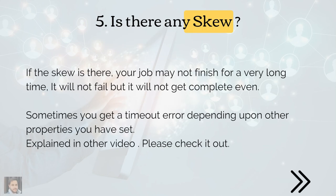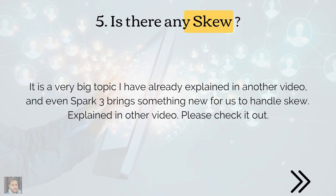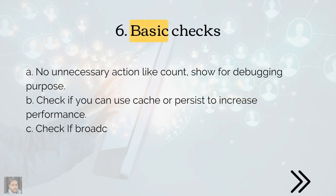The third scenario could be skew. If there is skew, you may keep waiting for your job to finish for a very long time — it won't fail, but it won't complete either. Sometimes you also get timeout errors depending on other properties you've set. Skew is a very big topic; I've already explained it in another video, and Spark 3 also brings something new to handle skew. Go and check out that video.